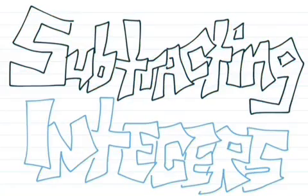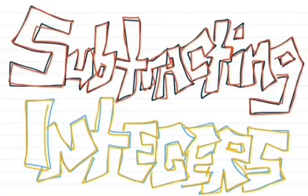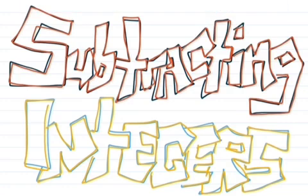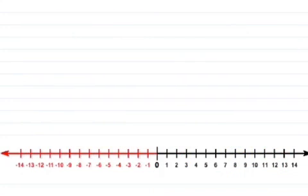So let's talk about subtracting integers. And in particular, let's talk about subtracting a negative from a positive, a negative integer from a positive integer, which means we'll start with a positive and then subtract a negative value. So our example is going to be 5 minus negative 3.